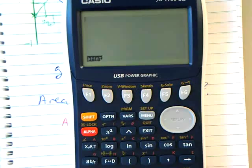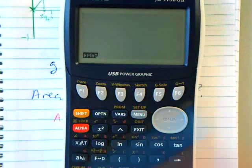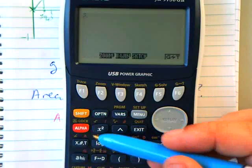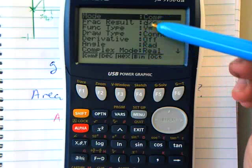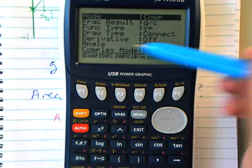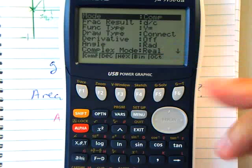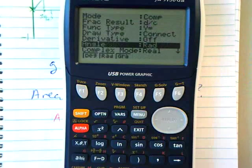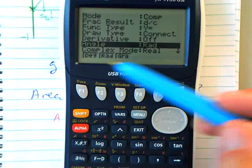To set it into degrees you're going to need the setup menu. Now anything in yellow requires the shift button first, anything in red requires the alpha button so you press shift menu and you get this setup and there's lots of bits and pieces in here but the key thing here is this angle is in rads. So what you're going to do you're going to use the down arrow and you're going to scroll it down until you get to there and now you've got three choices degrees radians or gradients.